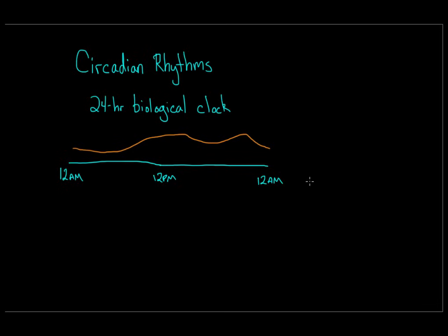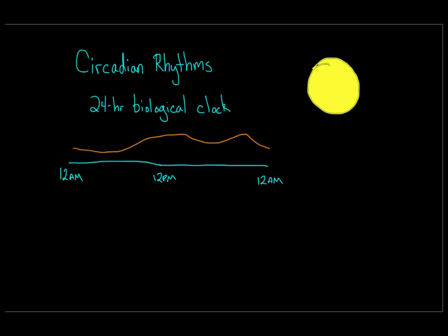Circadian rhythms control body temperature, sleep cycles, and more. Daylight is a big cue for circadian rhythms, and even artificial light can affect your circadian clock. That's why when you travel to a different time zone, airplanes adjust the lights to match your destination's time zone to help reset your biological clock. Resetting that clock takes time, which is when you experience jet lag — your biological clock says sleep, but your new time zone says wake up.